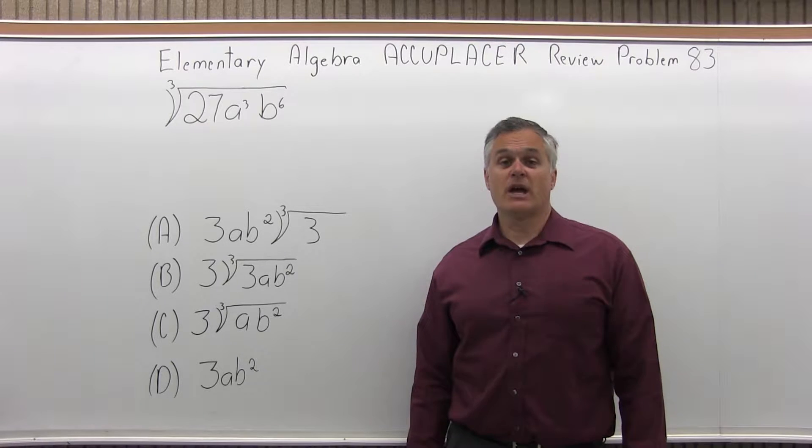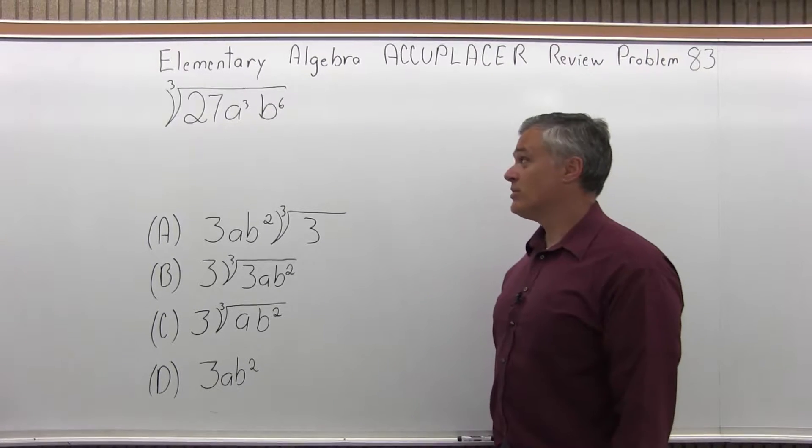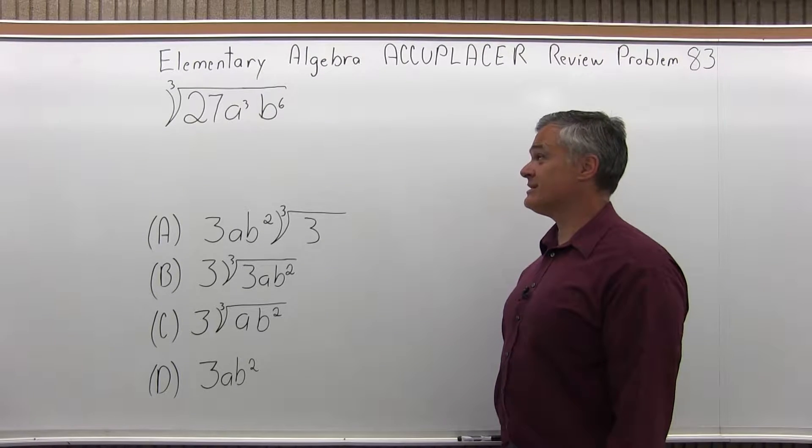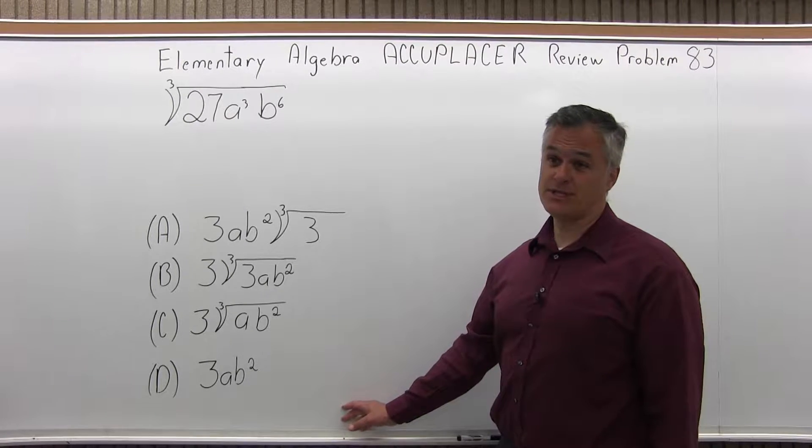This is the Elementary Algebra Accuplacer Review, Problem 83. We have the cube root of 27a³b⁶ equals which one of four options that are listed below.